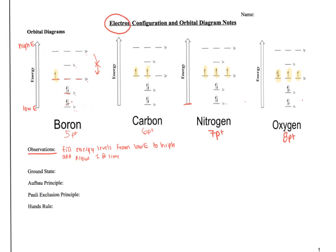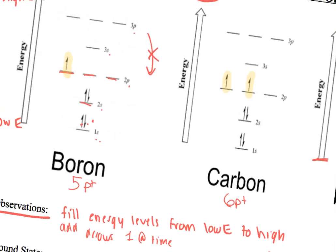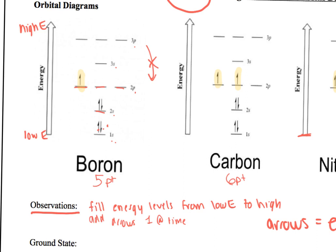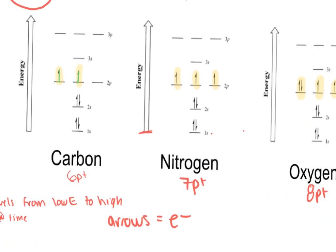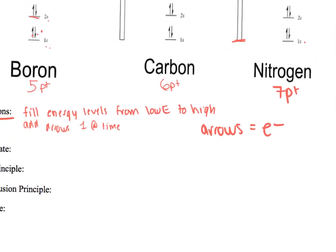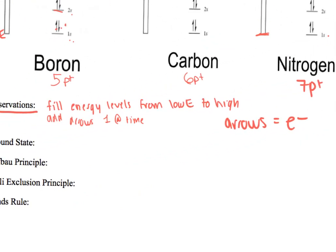Yes, those arrows could represent protons, but this whole section is called electron configuration, and these are orbital diagrams — what's in orbitals are electrons. Electrons are the ones that orbit the nucleus. So we're adding arrows to represent electrons. It looks like when we see these lines, some of the arrows have partners — one up, one down — and some do not. It appears we fill each line, adding one arrow to each line until every line has one, then we start to pair.